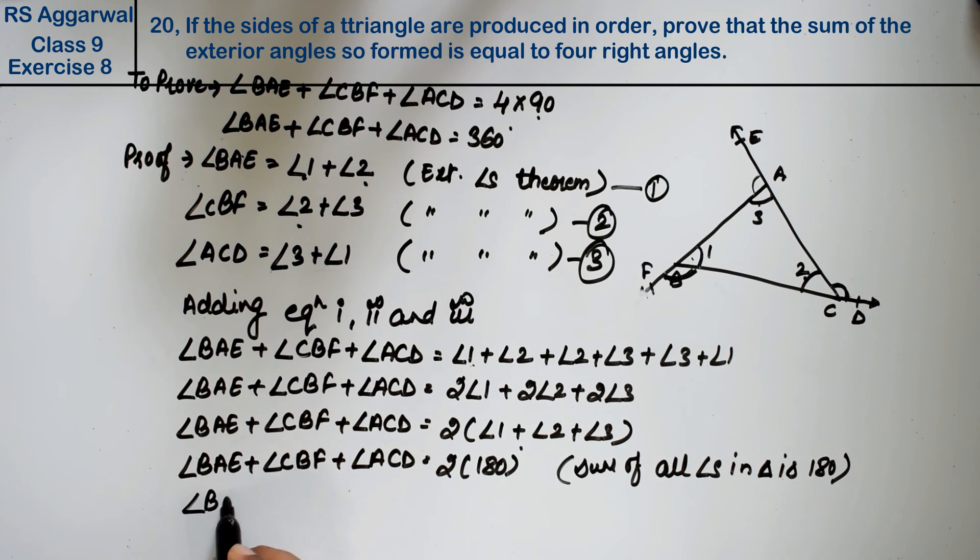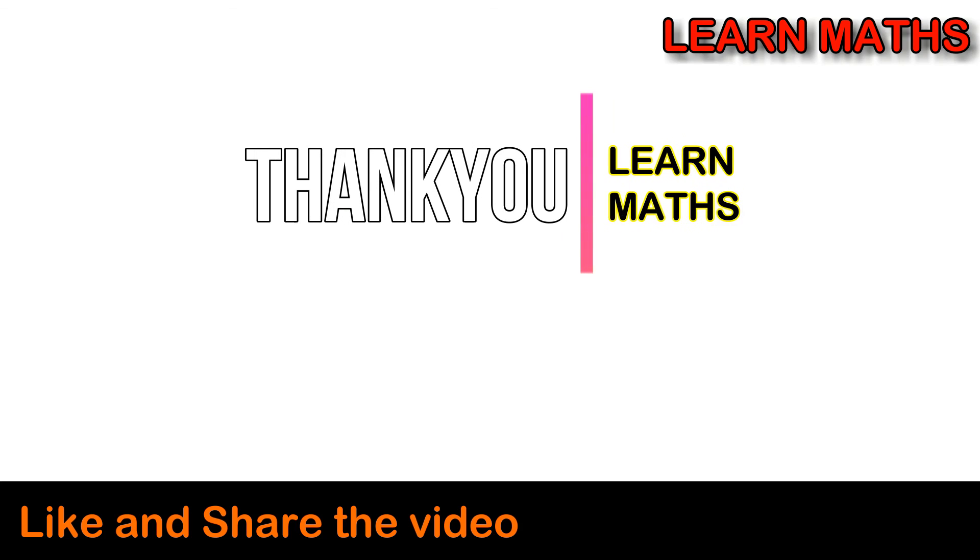Therefore, angle BAE plus angle CBF plus angle ACD equals 2 into 180, which equals 360 degrees. Thank you. If you understand this step-by-step solution, please subscribe to my channel Learn Maths and share it with your friends.